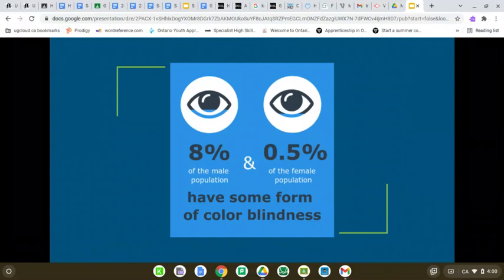Red-green colorblindness is the most common type, affecting 1 in 12 men and 1 in 200 women. It is so much more prevalent in men due to being an X-linked recessive trait.